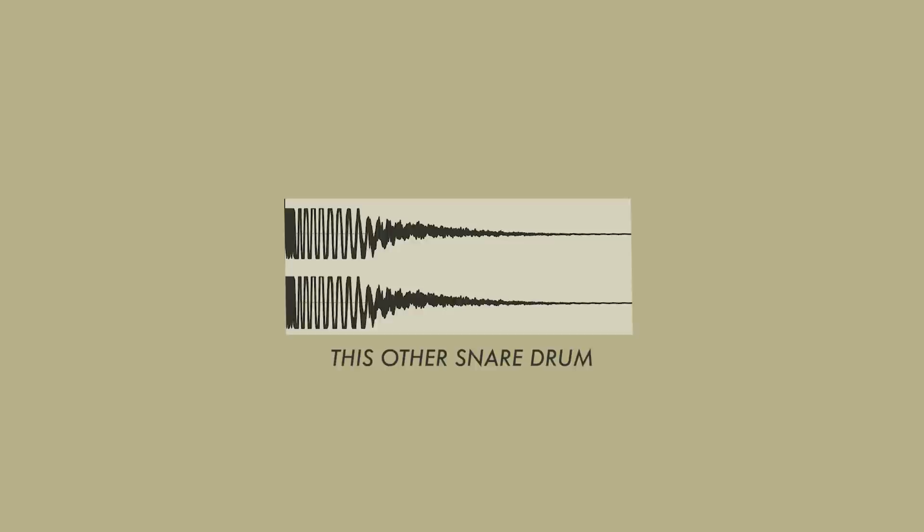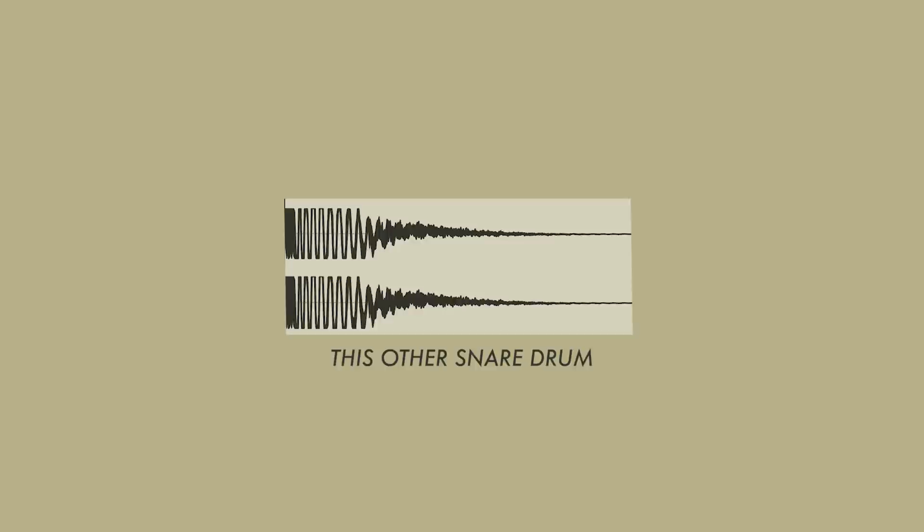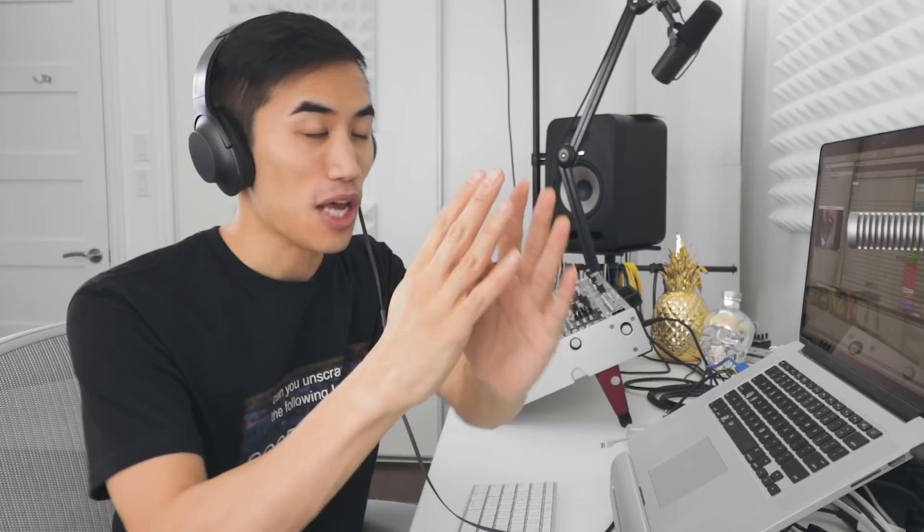First things first, it's not all Twitter sounds — I added three of my own: a kick drum, a snare drum, and another snare drum. Everything else was the Twitter samples. The first editing trick is not really a trick, it's just editing — just trimming, just cutting down to the part of the sound that is anywhere near usable.